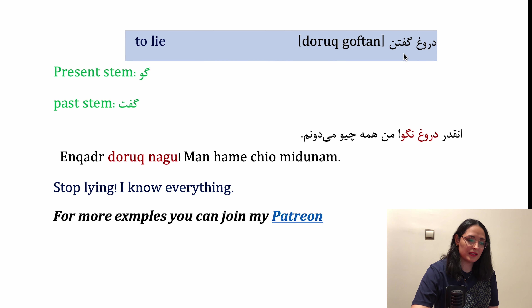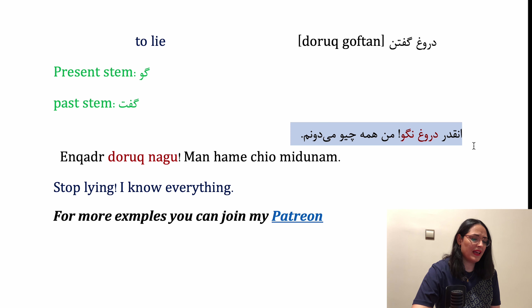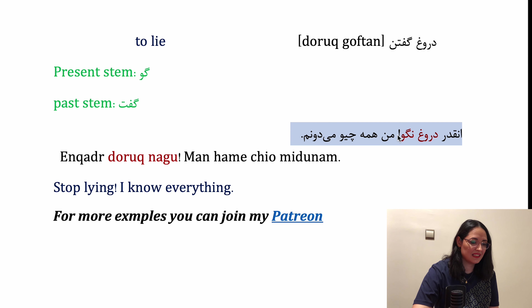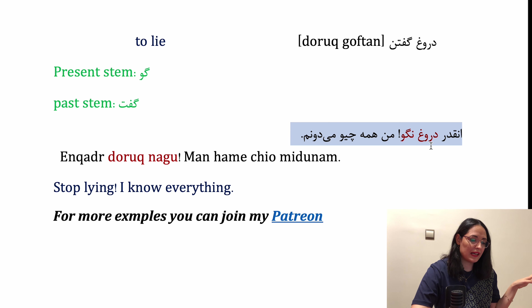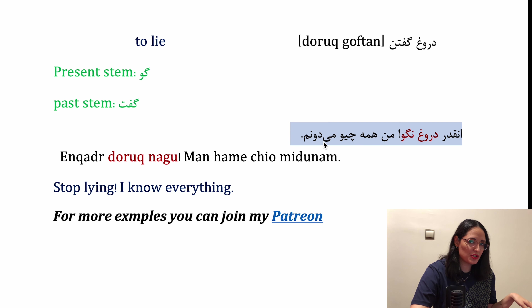There is never any obligation, but there is much appreciation. Okay, the fifth verb is doruogh guftan — to lie. It's a compound verb. The present stem is gu and the past stem is guft. Example: Enqadr doruogh nagu — Don't lie so much. Man hammeh chiyo midoonam — I know everything. Enqadr means stop or don't do something, so stop lying. Hammeh chiyo is hammeh chi ra in spoken Persian.